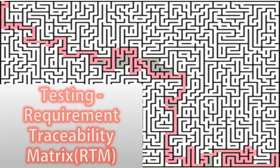Suppose if the end user finds a bug, the customer will first ask you to go back to the RTM and check why that particular requirement corresponding to those test cases has failed. They want to make sure that a test case was written for that particular requirement, and if it was written, they will question you why that particular test case was not tested. That's why this is a very important document to ensure that 100% testing coverage is done.